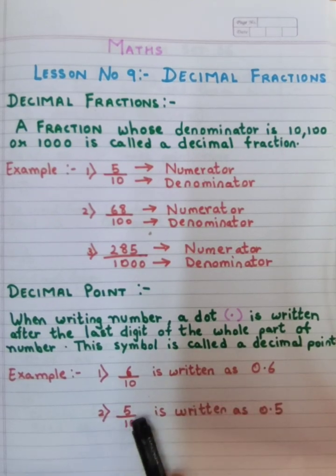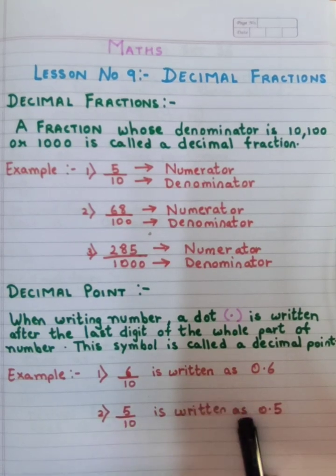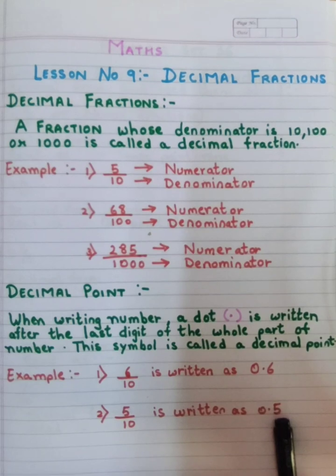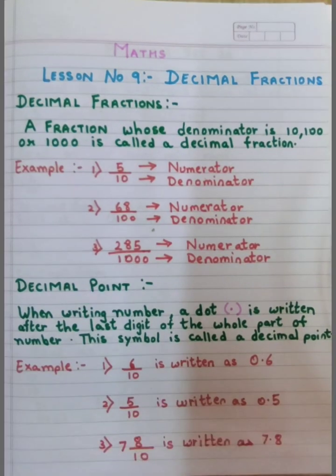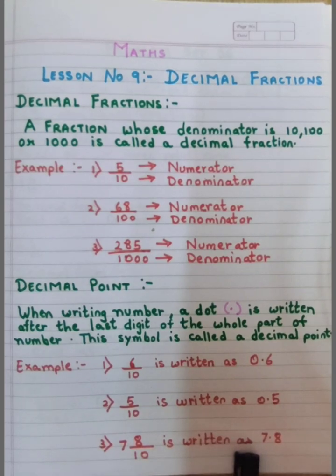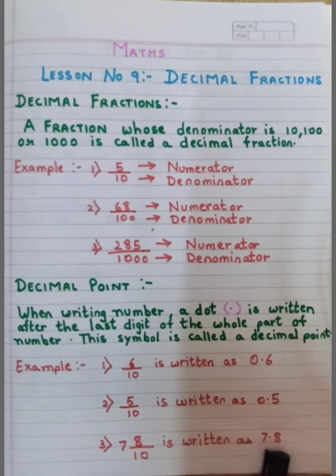Second example: 5 upon 10. Here also the denominator is 10, that means I have one zero. So I will write it as 0.5 — after the decimal point I write the number 5, only one number because I have only one 10. Third example: I have a mixed fraction, 7 and 8 upon 10, which is written as 7.8. I have one 10th part, so I place the decimal point before the number 8, giving 7.8.